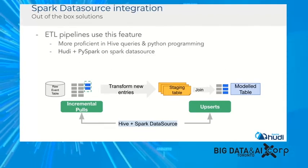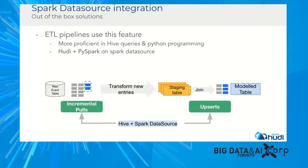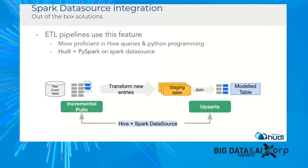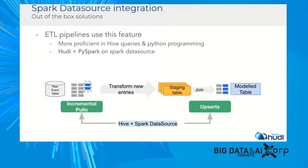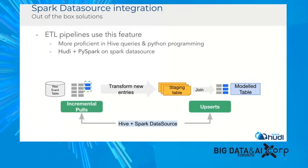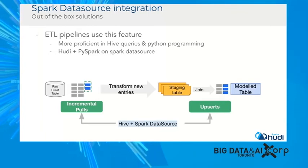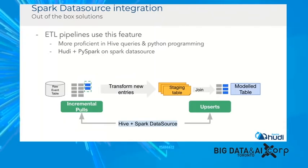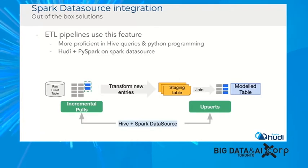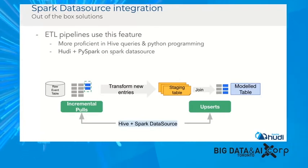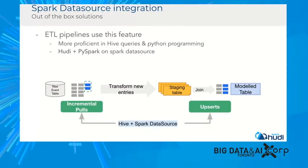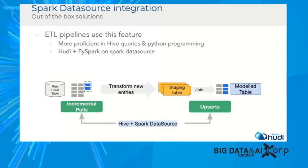Another popular way to use Hudi is through ETL pipelines. We already use Hudi to store all our raw data, and downstream ETL pipelines popularly use Spark data source integrations. Many ETL customers are familiar with PySpark, so they use PySpark and Hudi together. They use Hive queries to incrementally pull data, then use Hudi and PySpark to do collapses, table joins, and finally upsert that data into model data. This way, end-to-end, everything is incremental.